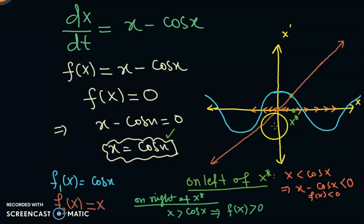From this conclusion, from this discussion, we can see that the point, equilibrium point x star, is source or unstable, because flow on the left side and on the right side is moving away from it. So this point is unstable.